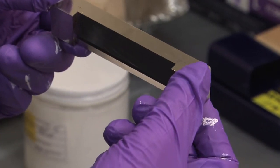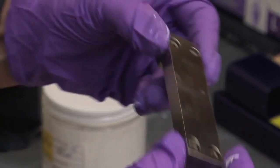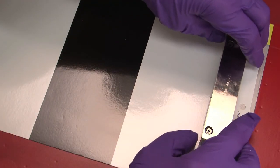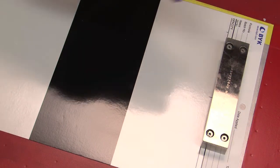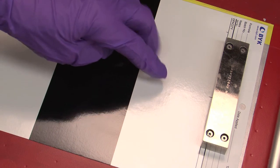To test opacity, we'll perform a drawdown using a bird film applicator with our automatic drawdown machine. We use drawdown panels patterned with black and white areas to see if the paint is capable of hiding them.